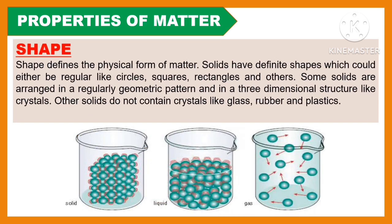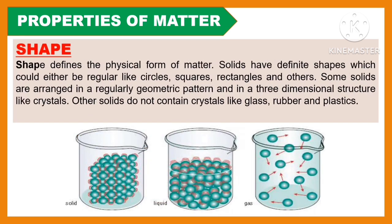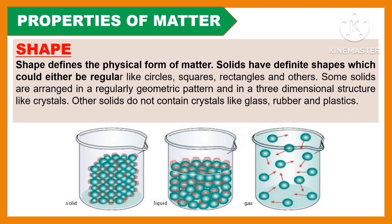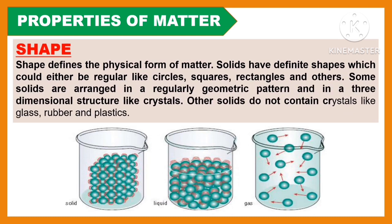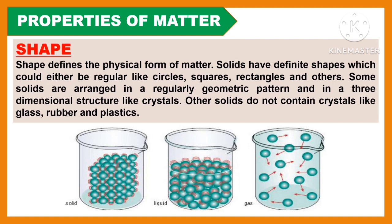Another property of matter is shape. Shape defines the physical form of matter. Solids have definite shapes, which could either be regular like circles, squares, and rectangles. Some solids are arranged in a regularly geometric pattern and a three-dimensional structure like crystals. Other solids do not contain crystals, like glass, rubber, and plastics.